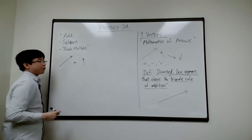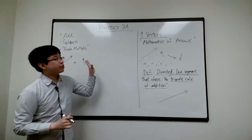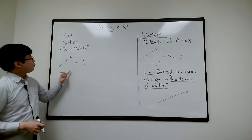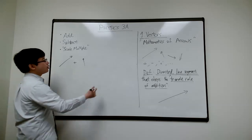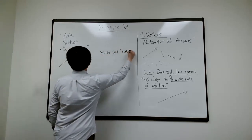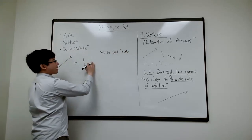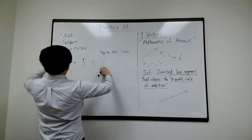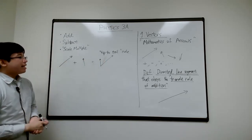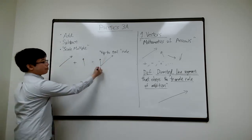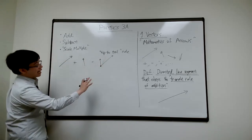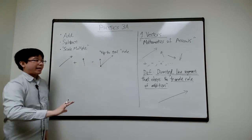If I have one arrow and another arrow and I say I want to add them — imagine you are the first person building this theory — what rule would you come up with? The rule is called the tip-to-tail or head-to-tail rule. The first step is to make the vectors start at the same point so you can compare them sensibly.